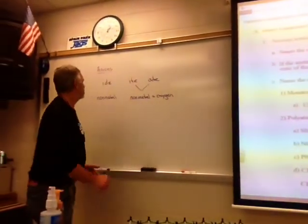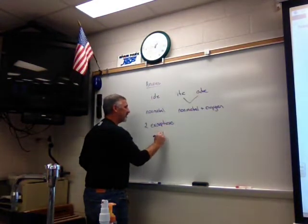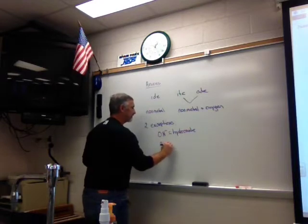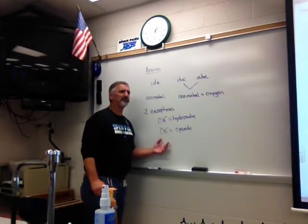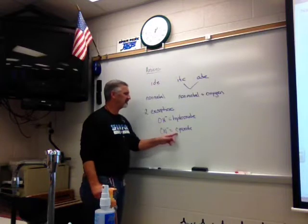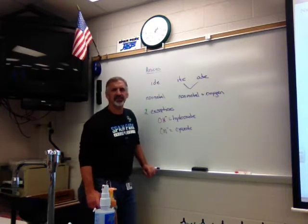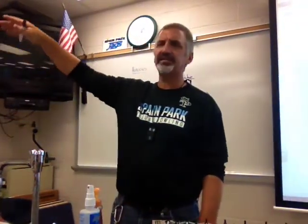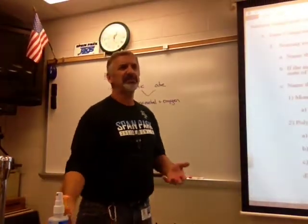There are two exceptions to the -ide rule: OH minus is called the hydroxide ion, and CN minus is the cyanide ion. Those are polyatomic ions that end in -ide but are not monatomic — you just have to memorize those. Otherwise, you can determine the ion by position on the periodic table: halogens are always minus one, the oxygen family minus two, the nitrogen family minus three. If it ends in -ide, it's just one element — you can have more than one of them, but it's just one element.